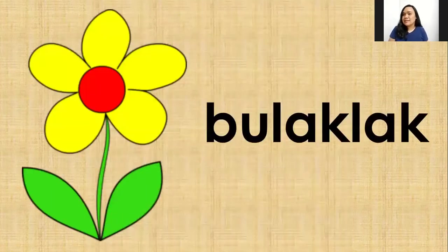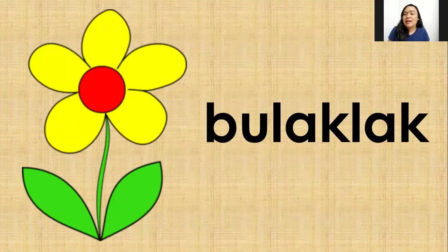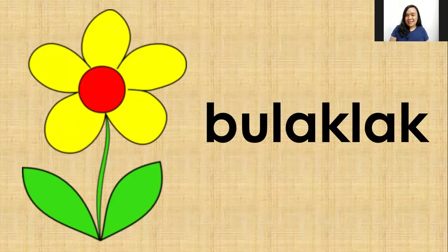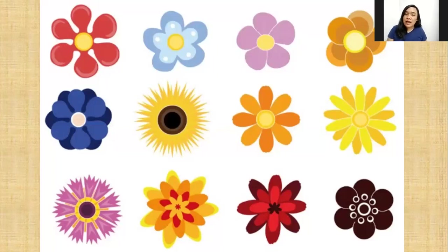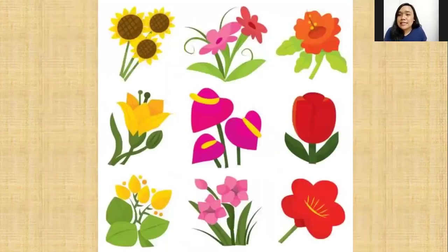Next: bulaklak. In English we call this 'flower,' but in Tagalog we say 'bulaklak.' That's another tongue twister, so let's say it slowly: bu-lak-lak. Very good! Bulaklak makes our surroundings look beautiful because they have different colors, different sizes, and different shapes. Without the bulaklak, our world will not be very colorful.